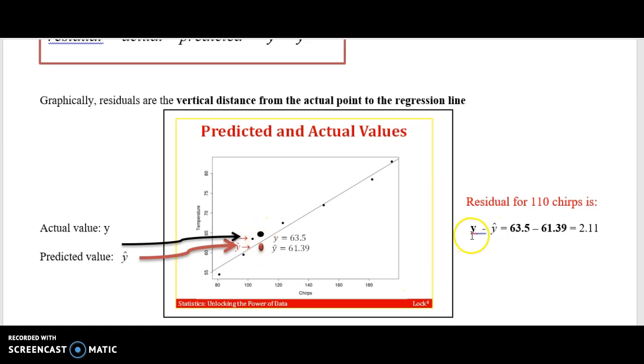So the y actual minus y hat predicted value is 63.5 minus 61.39, or 2.11. That's our residual for at exactly 110 chirps. So when there are 110 chirps, the residual is the value 2.11.